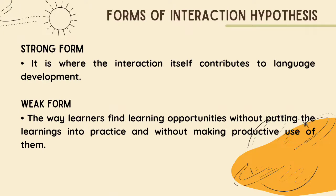Let's proceed with the forms of the interaction hypothesis: the strong and the weak forms. The strong form refers to the form of the interaction hypothesis wherein the interaction itself contributes to language development — it is where the exchanging of conversations became a vital role in acquiring the second language. The weak form, on the other hand, is the way learners find learning opportunities without putting learnings into practice — they just learn, read, and listen to the speakers without giving much attention to their meanings and without giving much clarifications. The second language learners are passive.